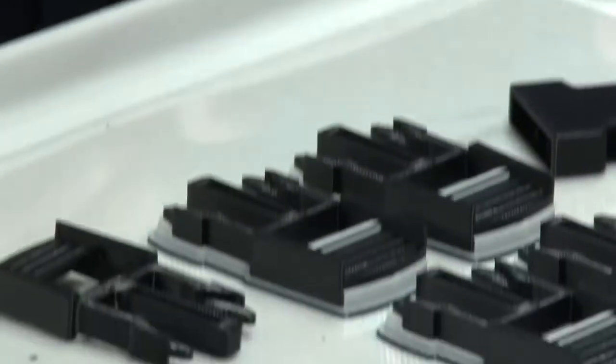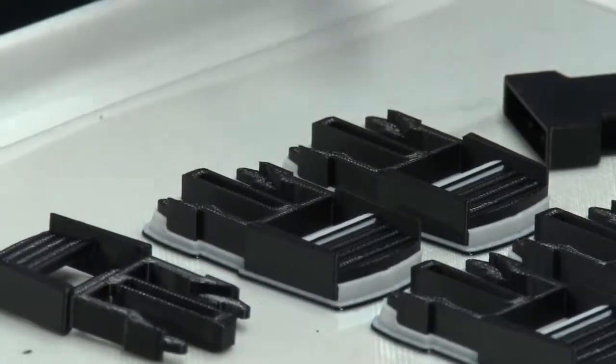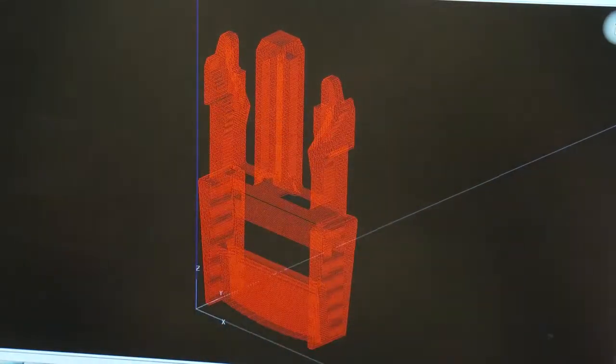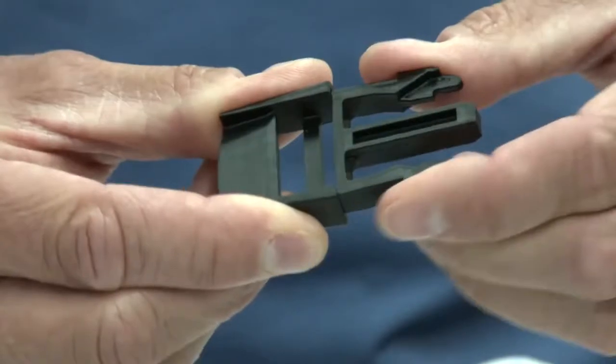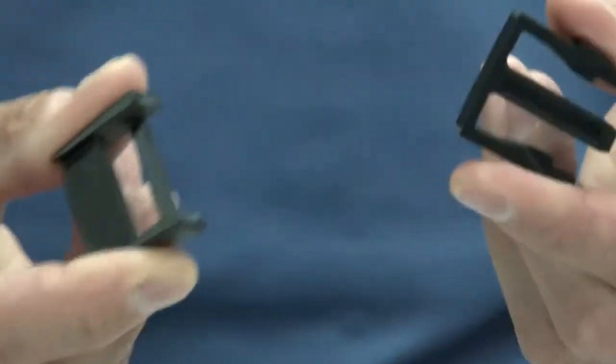This part is a good example of where orientation affects the functionality of the part. Along these layer lines between Z layers is weaker than what you're going to see on the other geometry. I can easily take this and flex it, and there you see that broke off pretty easily.